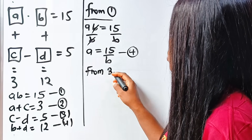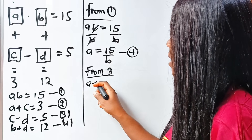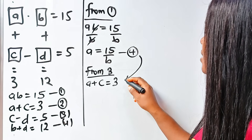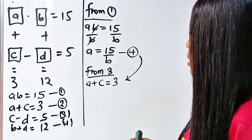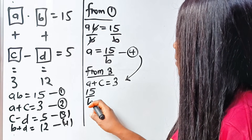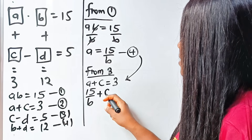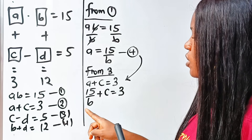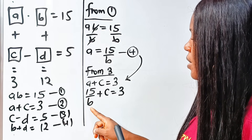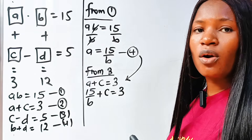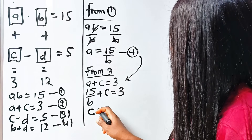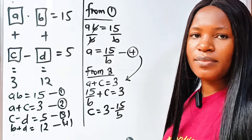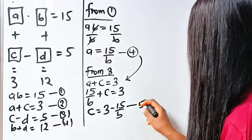From equation 2, A plus C is equal to 3. Substituting A as 15 over B, we have 15 divided by B plus C equals 3. To get C, we subtract 15 over B from both sides. Therefore, C is equal to 3 minus 15 divided by B. This becomes equation 5.